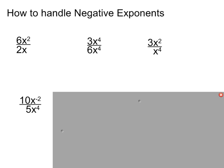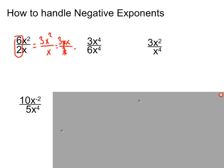For division, we look at our coefficients and divide first: 6 divided by 2 is 3, and we write the answer up top. I like to let the variables sit where they are while I handle the coefficients. Then ask: is everybody happy? The 3 is happy, the x's are happy. Then we cancel out — if there are 2 x's on top and 1 on the bottom, the final answer is 3x.